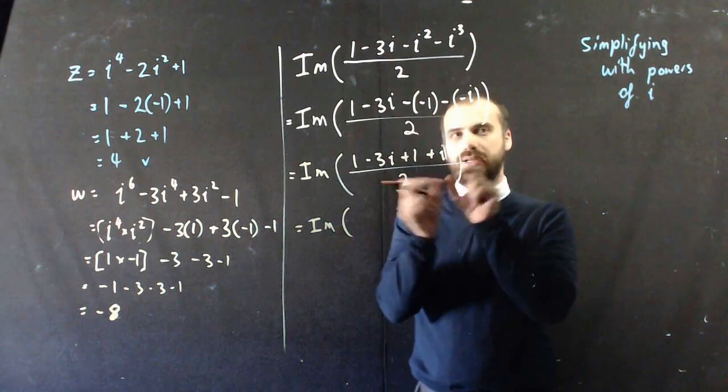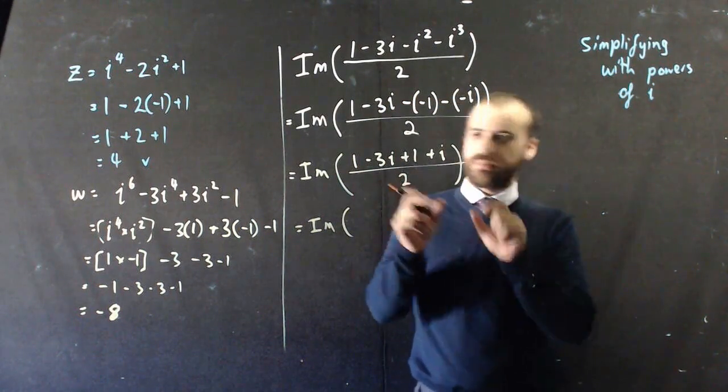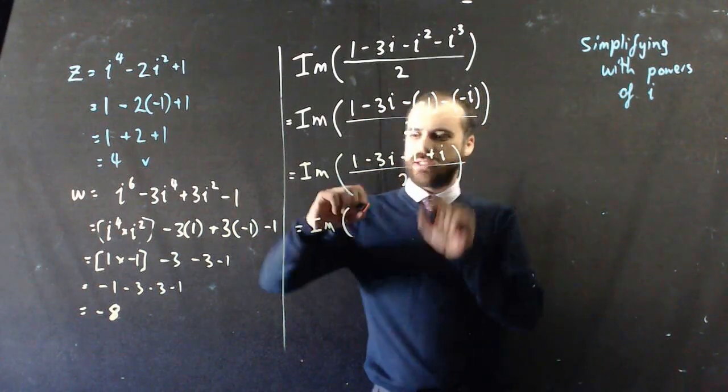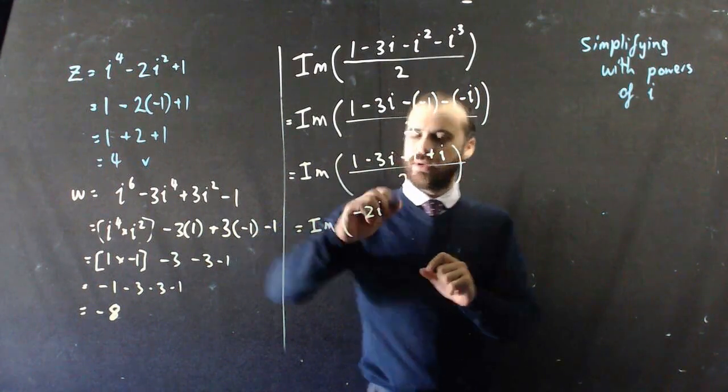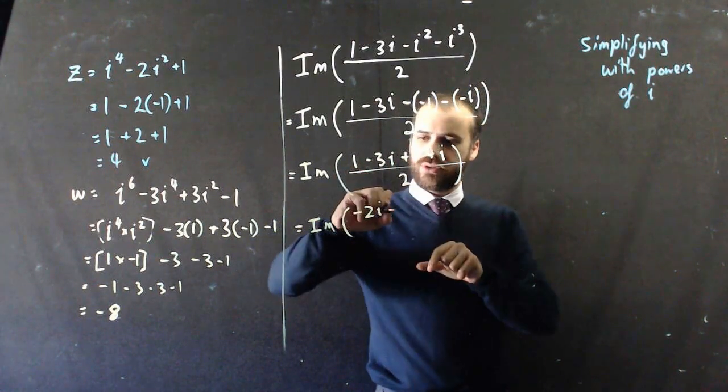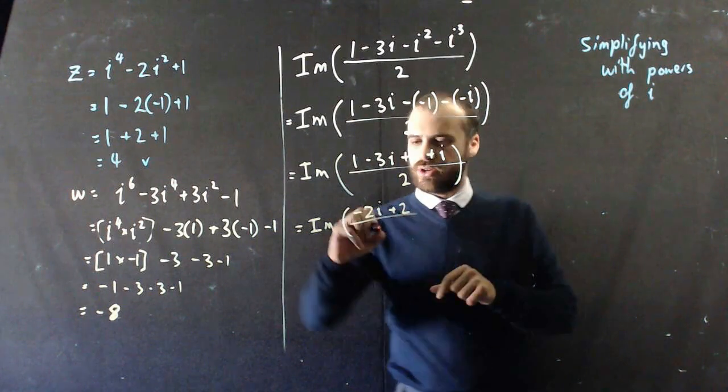Resolving this into imaginary and real numbers, negative 3i plus i is negative 2i. 1 plus 1 is 2. I'm going to divide the whole thing by 2.